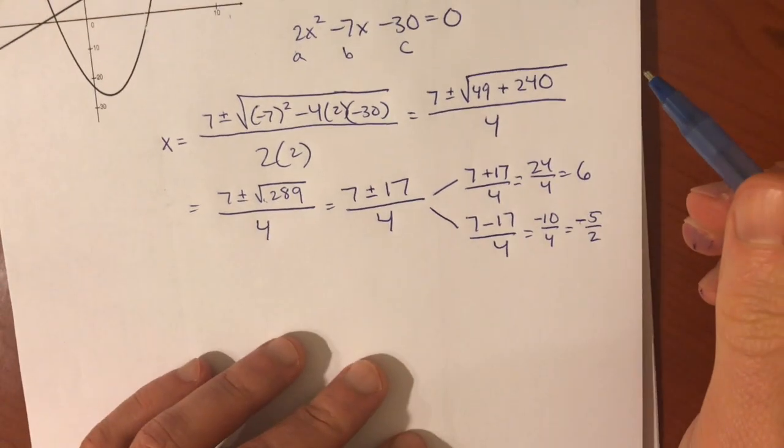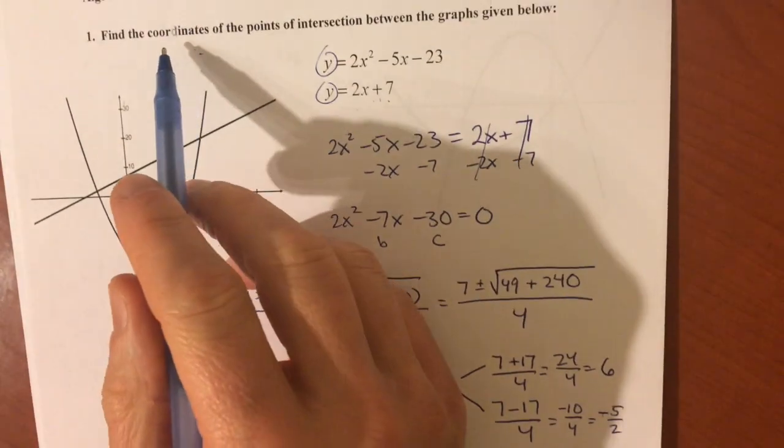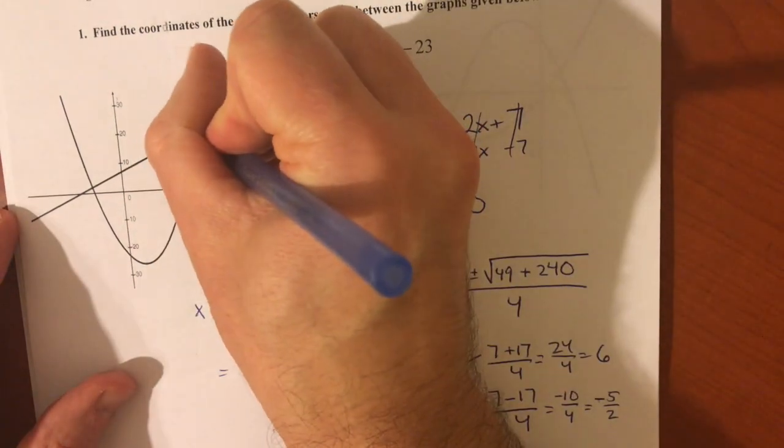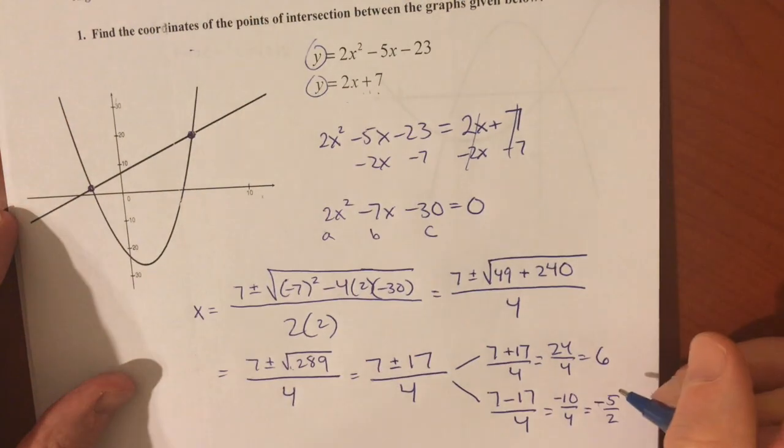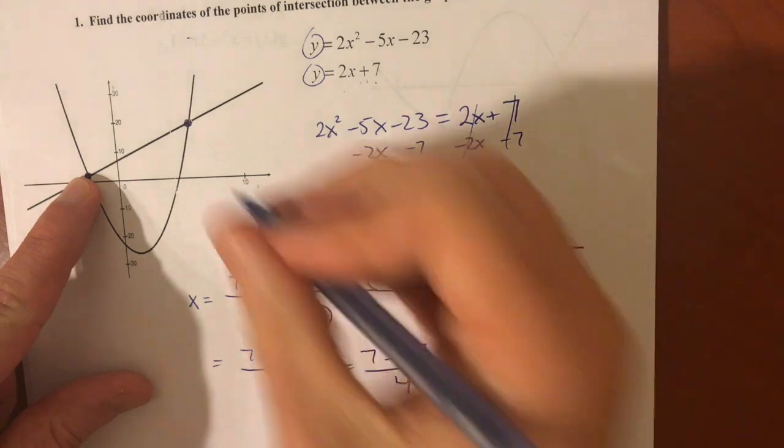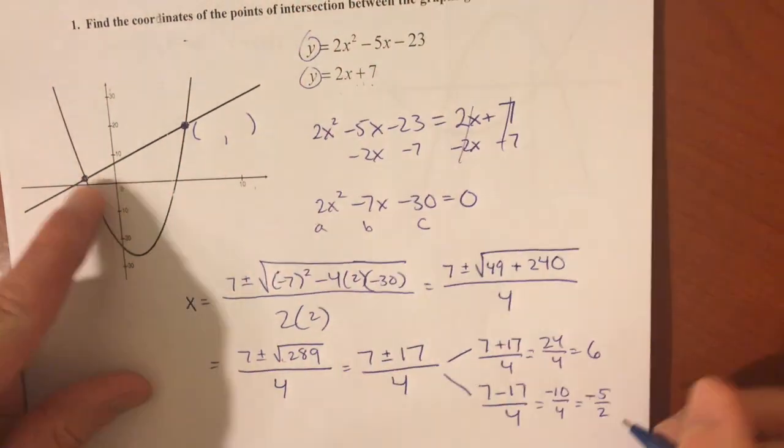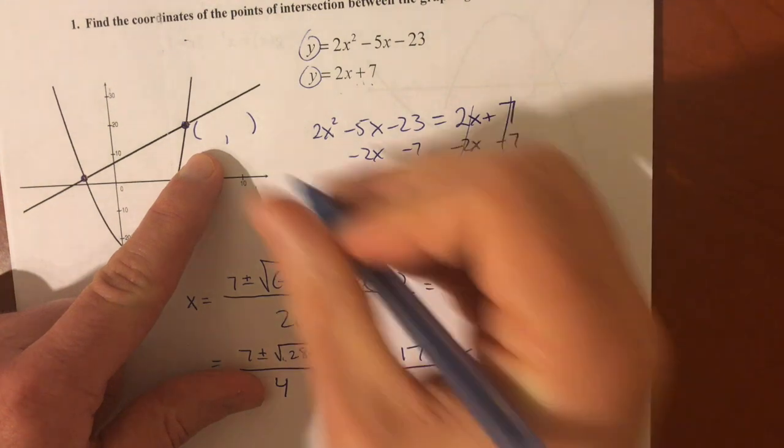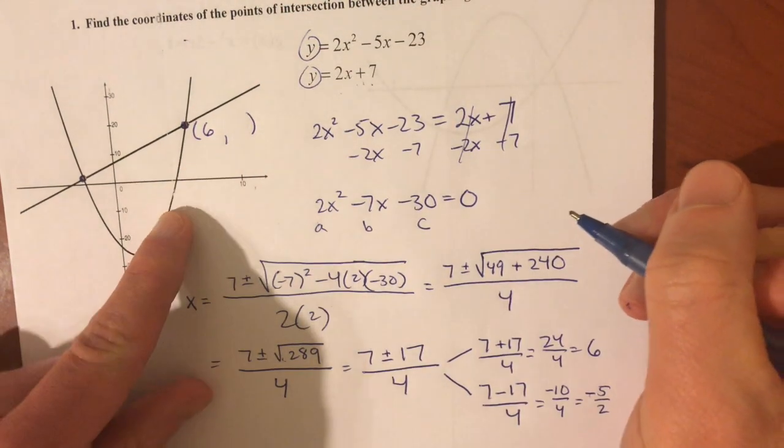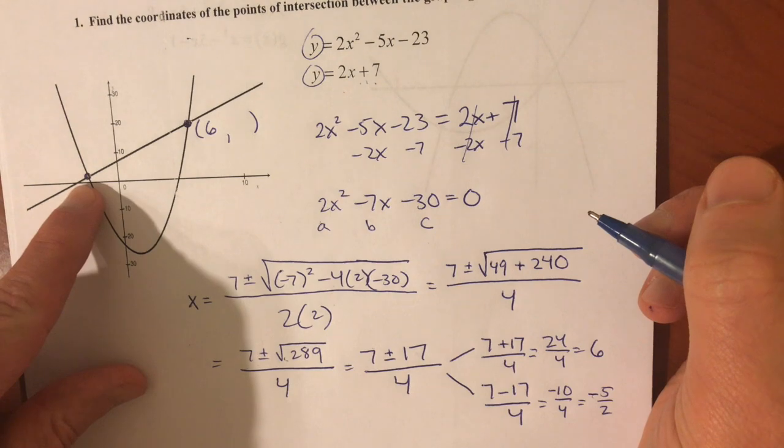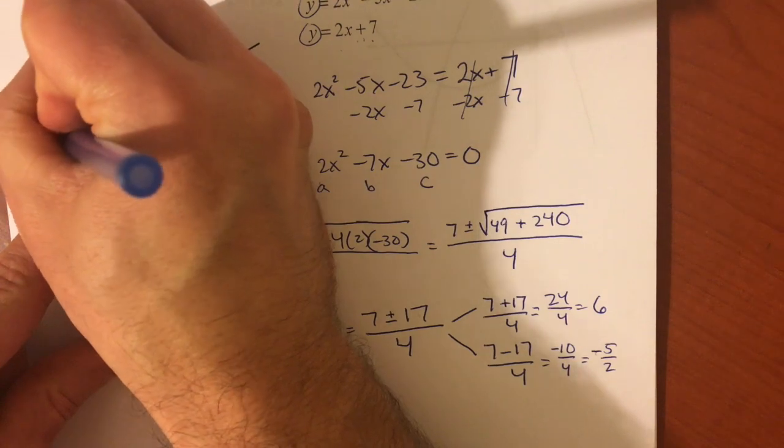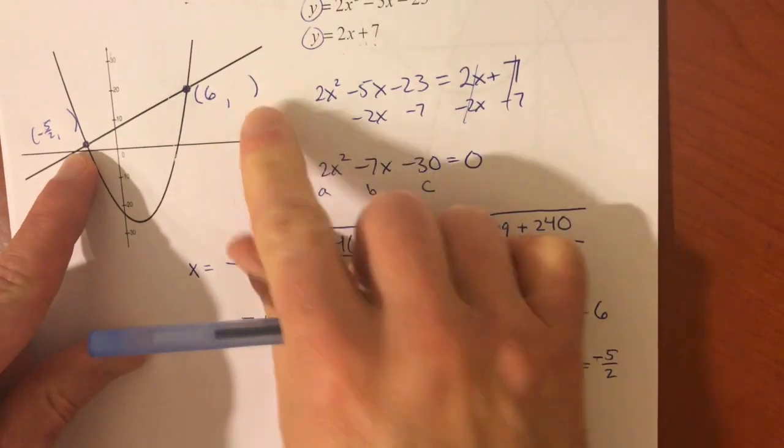The only difference here is that they are asking for the coordinates of the points of intersection. So, just like when we did systems of equations, you've got to find the x coordinates and the y coordinates. Well, there are two points, and I just found the x coordinates for the two points. One of the solutions I got was x equals 6, and that is this one right here. And, this one here is going to be negative 2.5, or negative 5 halves, comma something.